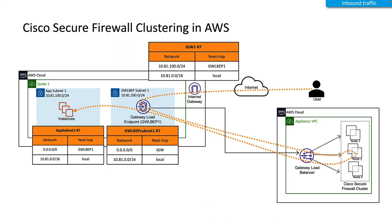Once the firewall receives the traffic, it inspects it, and if traffic is allowed, it sends it back to the gateway load balancer using the same interface. The gateway load balancer then sends it back to the GWLB endpoint, and from there it is sent to the workload that the user is trying to reach.